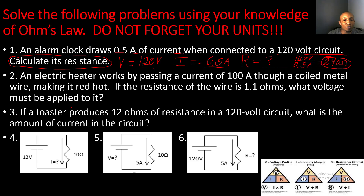Now go ahead and do problems two through six, solving for the missing components. For problems four through six, the missing component always has a question mark beside it. You can use your Ohm's Law triangle to solve for them. Pause the video now and come back to your desk to solve your problems.